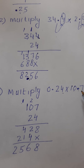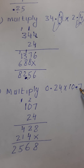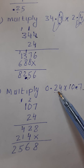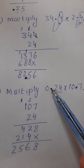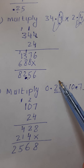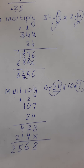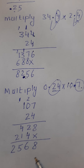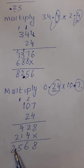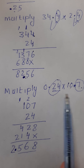Now insert the decimal. Observe how many digits are after the decimal in your question: we have two digits after the decimal in 0.24, and one digit after the decimal in 10.7. In total we have three digits after the decimal, so your decimal should be placed where you have three digits after it.